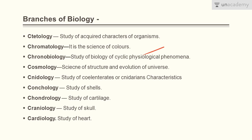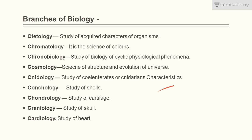Etiology of acquired characters is the study of acquired characters of organisms. Chromatology is also the science of colors. Chronobiology is the study of cyclic physiological phenomena. Cosmology is the science of structure and evolution of the universe — cosmos means universe. Conchology is the study of shells. Chondrology is the study of cartilage. Craniology is the study of the skull or cranium. Cardiology is the study of the heart and the cardiovascular system.